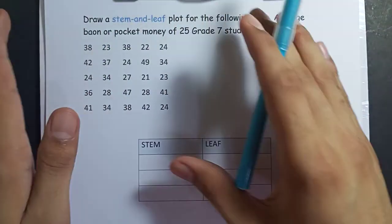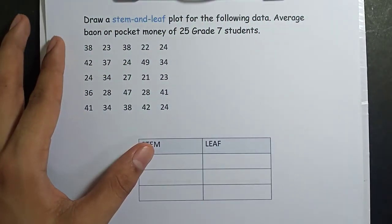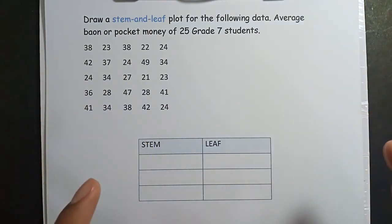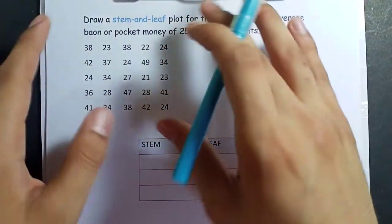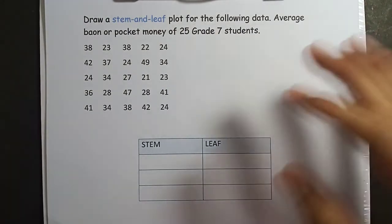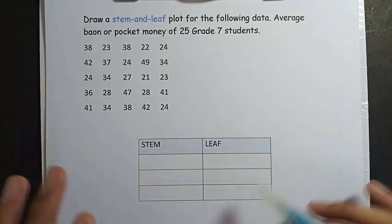I will show you how to create a stem and leaf using this example. So, average baon or pocket money of 25 grade 7 students. The stem and leaf provides us a better way in representing this data. As you can see, it's kind of confusing. So how do we do this? I'll list them one by one.